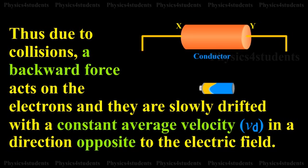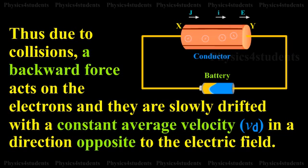Thus, due to collisions, a backward force acts on the electrons and they are slowly drifted with a constant average drift velocity Vd in a direction opposite to the electric field.